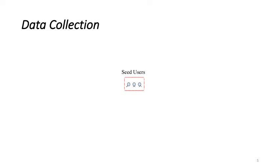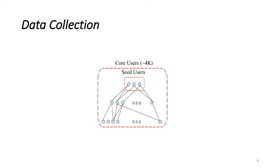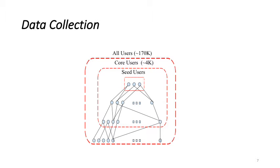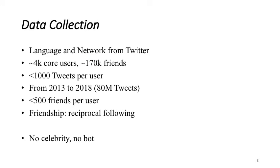So to perform this study we need a dataset that contains both network and language. We crawled Twitter starting from three seed users. We collected all their reciprocal friends at maximum distance of two that forms our 4,000 core users. Then we went one more hop ahead to collect about 170,000 of all users of interest. For those 4,000 users we got all the reciprocal friendship network and for those 170,000 all users we got their tweets from 2013 to the end of 2018. We limit our users' friends to 500 and their tweets to 1000 in order to stop celebrities or bots to overtake the network.